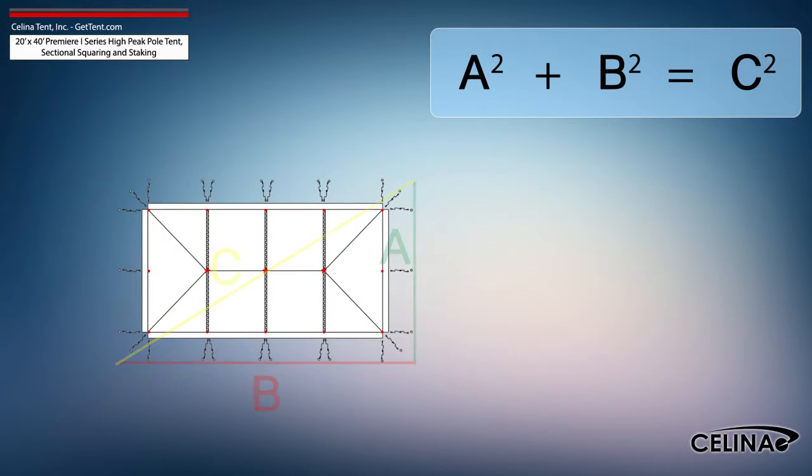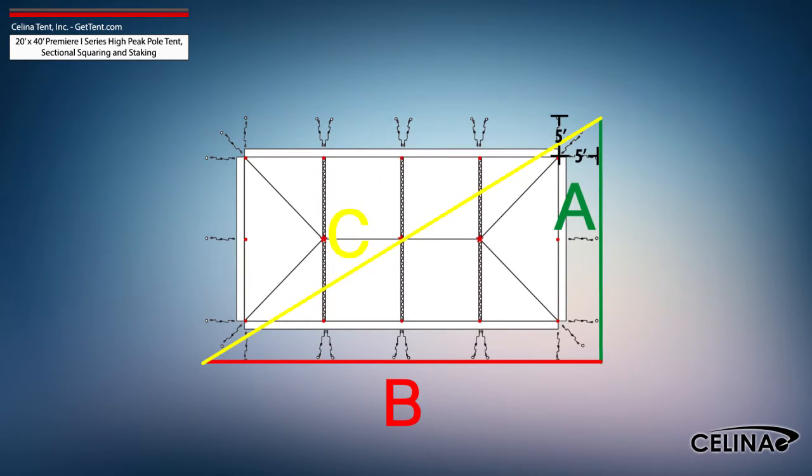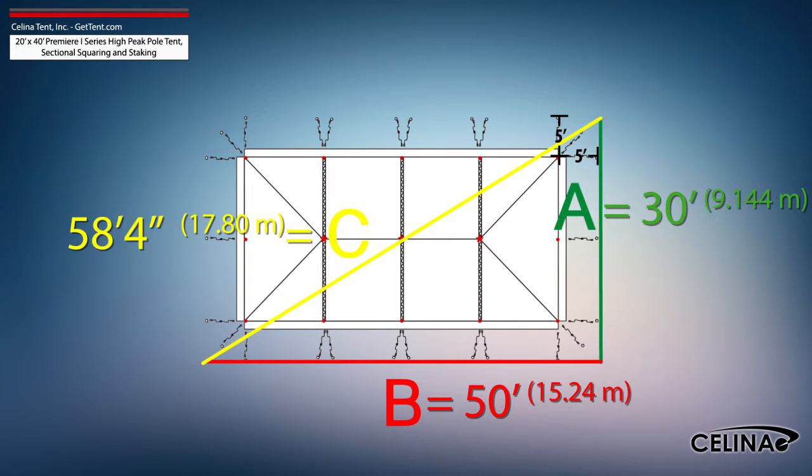Using the Pythagorean Theorem and adjusting out for 5-foot staking, the entire tent footprint will be 30-foot by 50-foot with a 58-foot, 4-inch diagonal length.